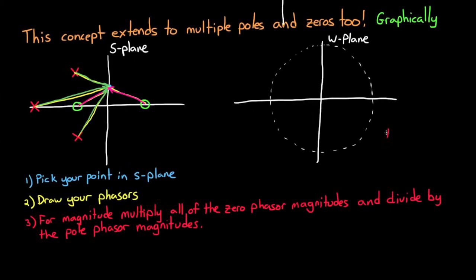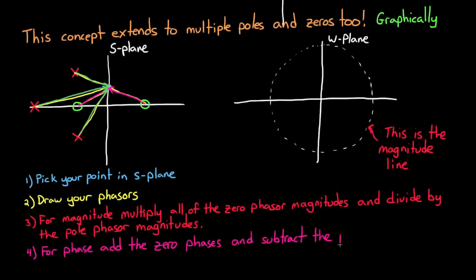Step 4 is to determine the phase by adding the phase of all of the zeros and subtracting the phase of all of the poles. So in our case we'd add the two blue angles, subtract all of the orange ones, which just by eyeballing it looks like the phase would be just greater than 90 degrees, and so it would be here in the w-plane.